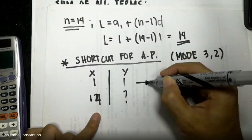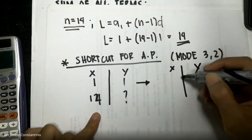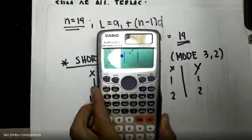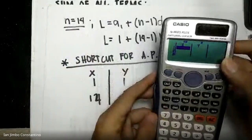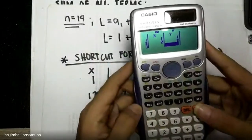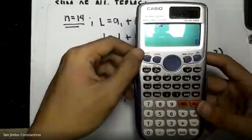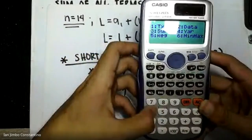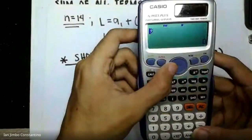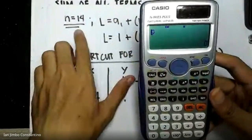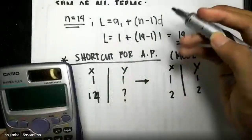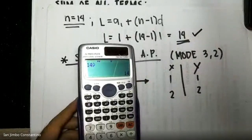The correct technique is to input two consecutive given terms. For this problem, input x = 1, y = 1 for the first term, and x = 2, y = 2 for the second term. Press AC, then Shift, 1, 5, and the hat symbol (Ŷ). Before pressing Ŷ, enter 14 — the term number you want to find. The answer will be 14, confirming our last term.